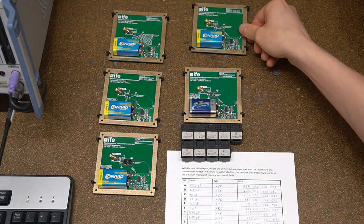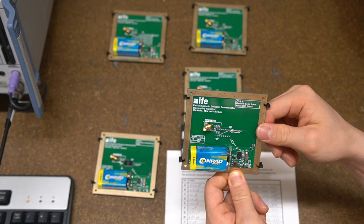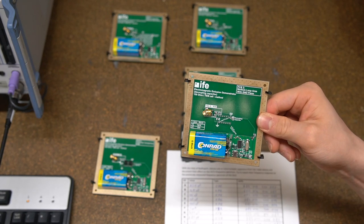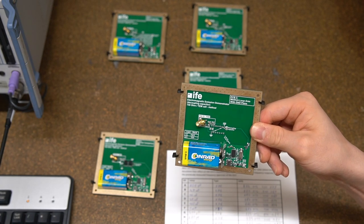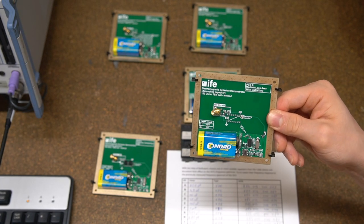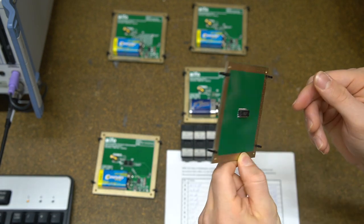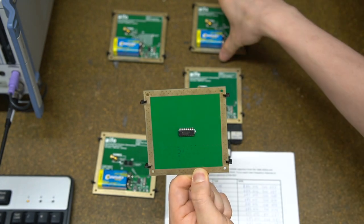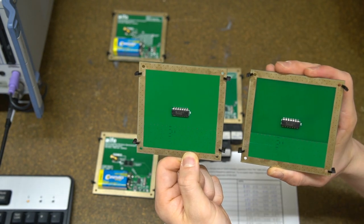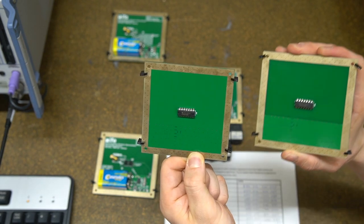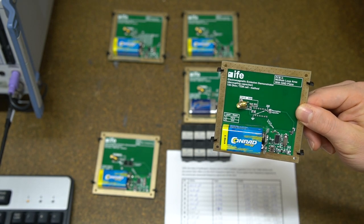For the next PCB we have PCB number three and this most likely provides the biggest improvement. From PCB two to PCB three there is one major change and that is on the bottom layer we have a ground plane. You can see there's a ground plane, and for comparison PCB two doesn't have a ground plane and this is very significant because this measure reduces the emissions by quite a lot.